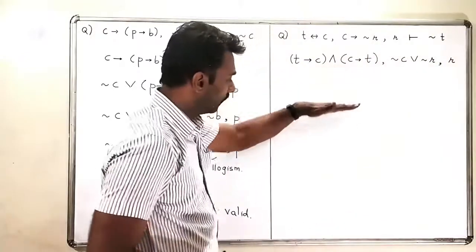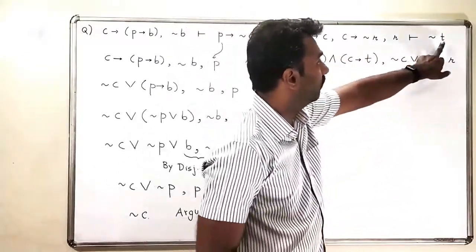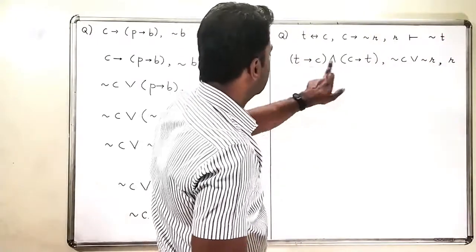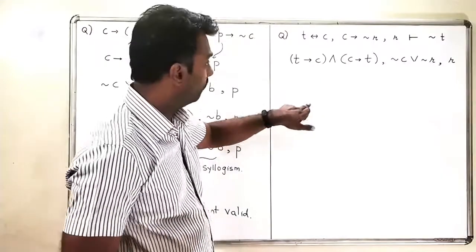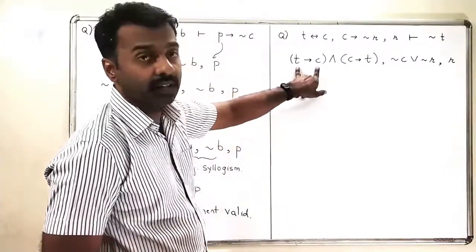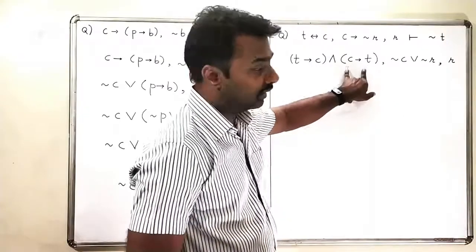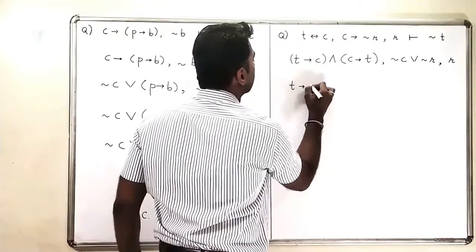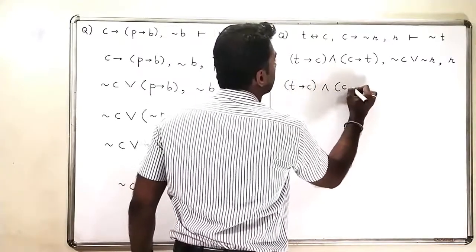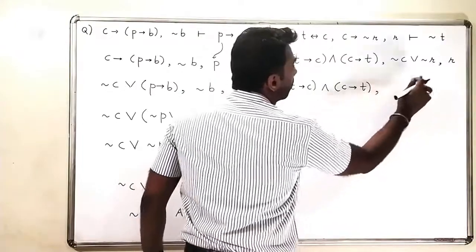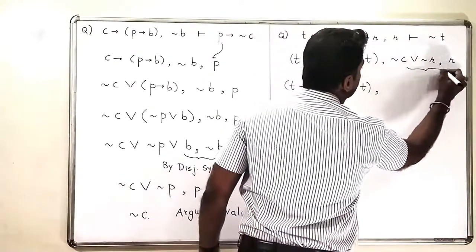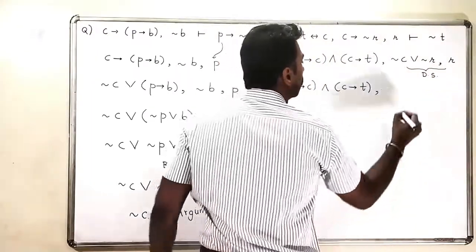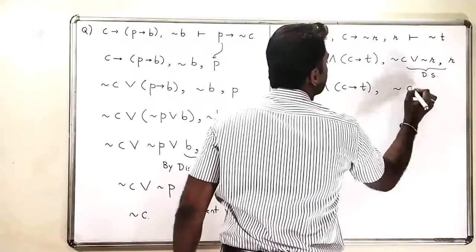I need to simplify this and check whether it comes out to be negation T. There are two implications, so I need to decide which to carry forward. Let me restate: T implies C with C implies T. Applying disjunctive syllogism to negation C or negation R with R, the negation R goes away, leaving negation C.